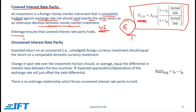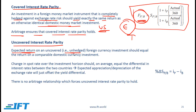Arbitrage ensures that covered interest rate parity holds. Uncovered interest rate parity states that the expected return on an uncovered or unhedged foreign currency investment should equal the return on a comparable domestic currency investment.